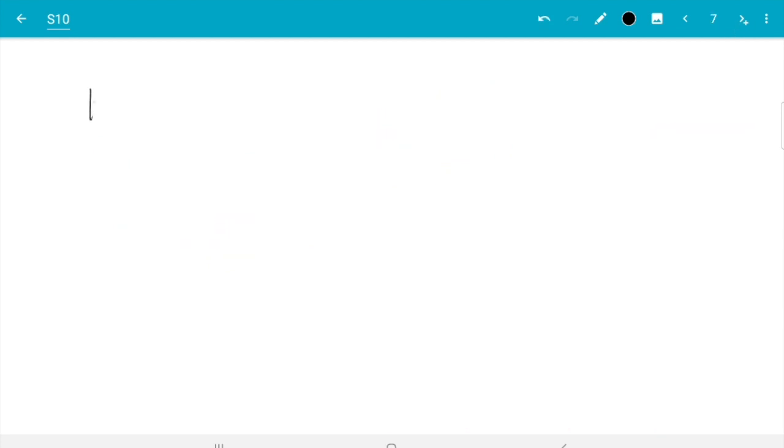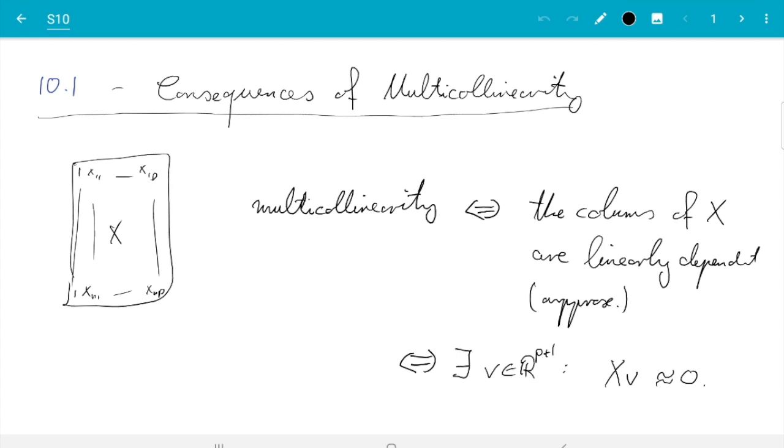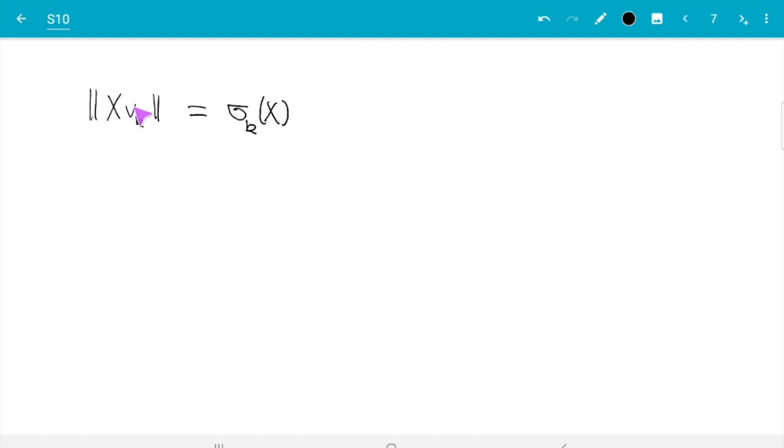All of this argument just shows the length of X vk is sigma k of X. That tells us something, because if we think back to the start of the video, if we find a vector v such that X v is small, close to zero, then we have identified multicollinearity. Here we have X v has length sigma k, so if sigma k is approximately zero we have multicollinearity.